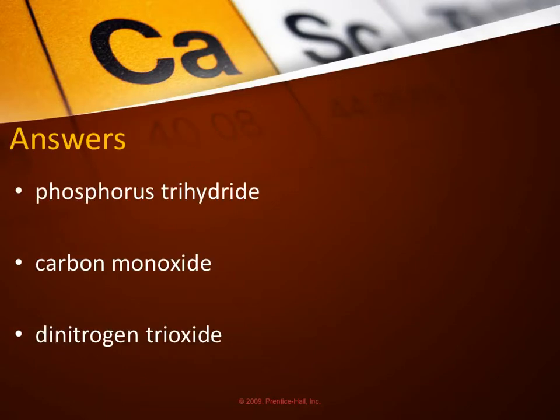How'd you do? Phosphorus trihydride. The rules are pretty similar. The first element in the compound is named just like it is in the periodic table. The second element has a suffix of -ide just as in ionic.